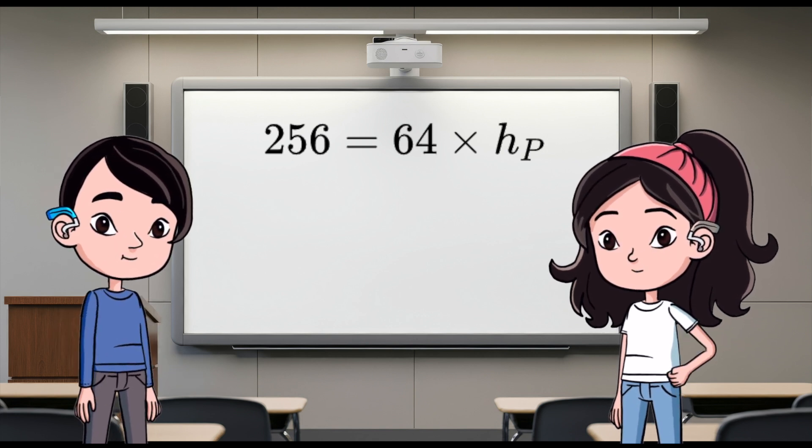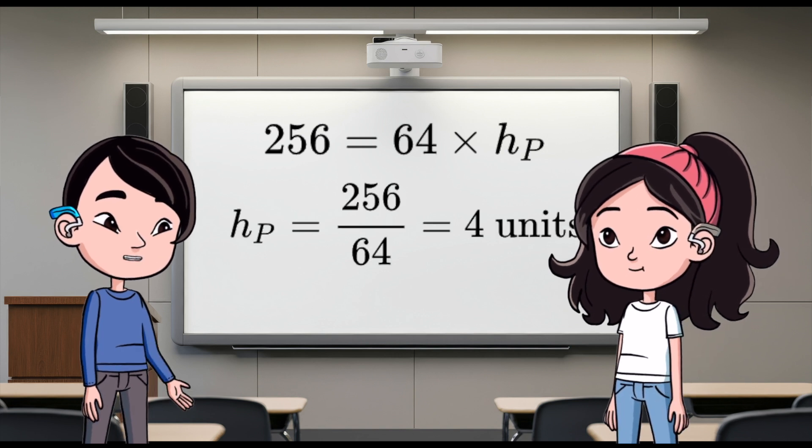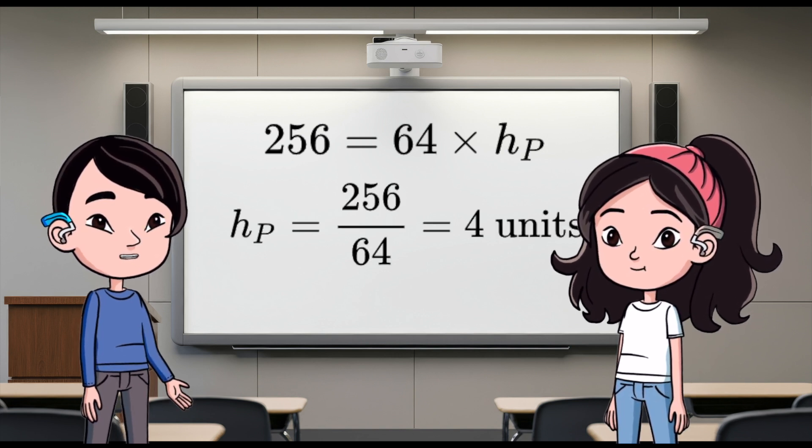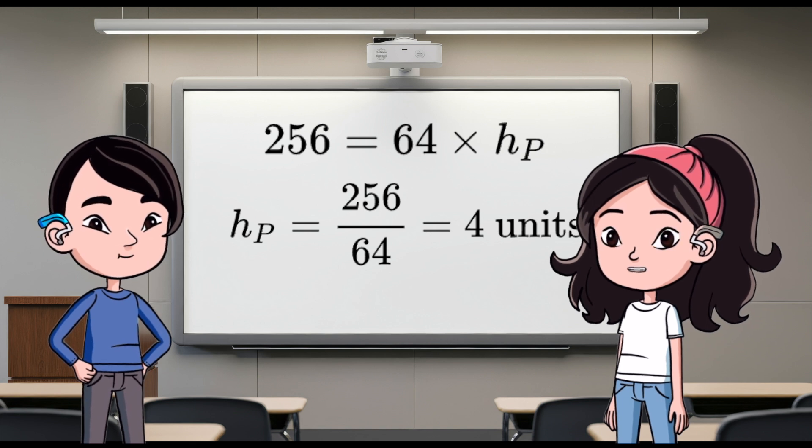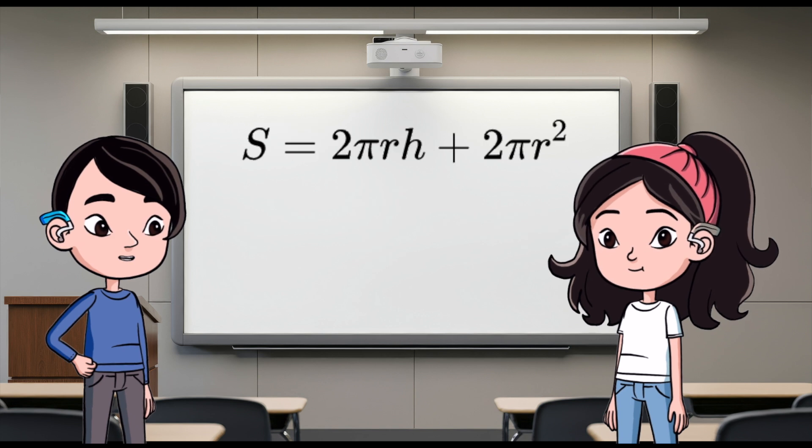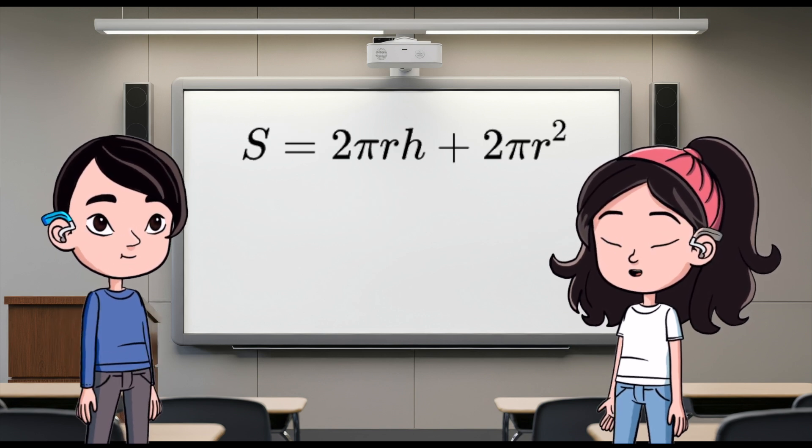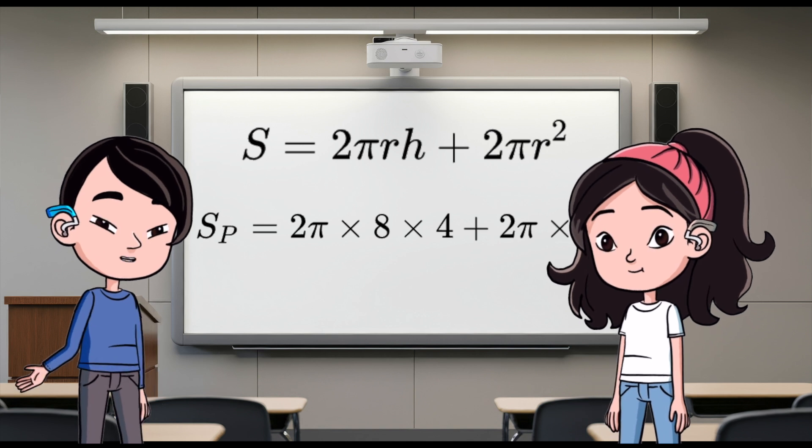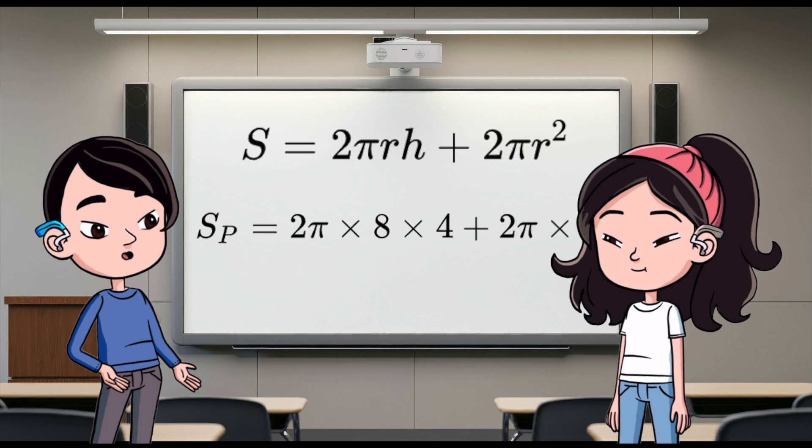Then solve for h sub P by dividing both sides by 64. So, h sub P equals 256 divided by 64, which is 4 units. Sweet. Now, let's find the surface area of cylinder P. The surface area formula is S equals 2πrh plus 2πr². Plugging in the values. S sub P equals 2π times 8 times 4 plus 2π times 8².